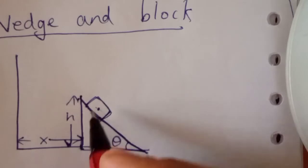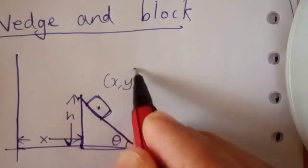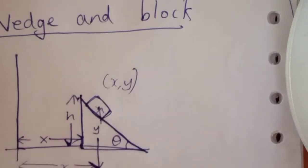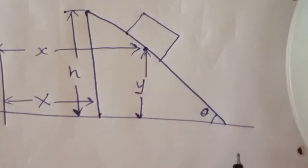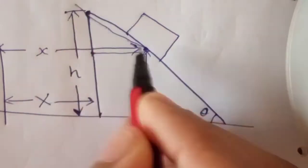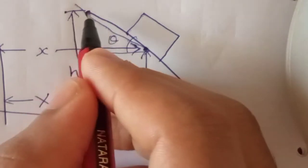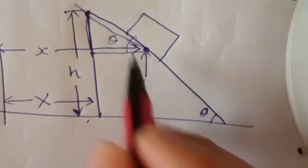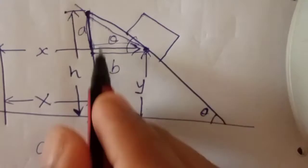The coordinates change. The height is y. This is a triangle — this is the same. In this block, we have a distance. The total height minus y.